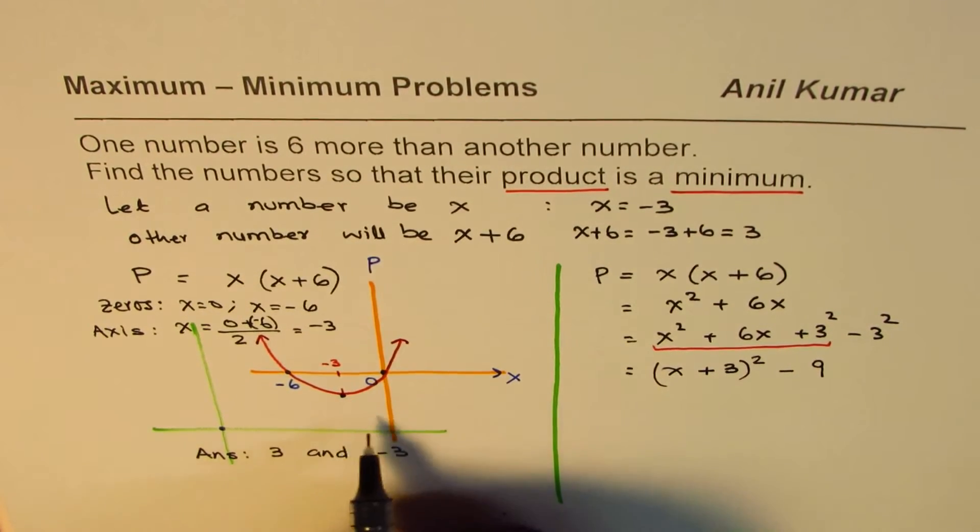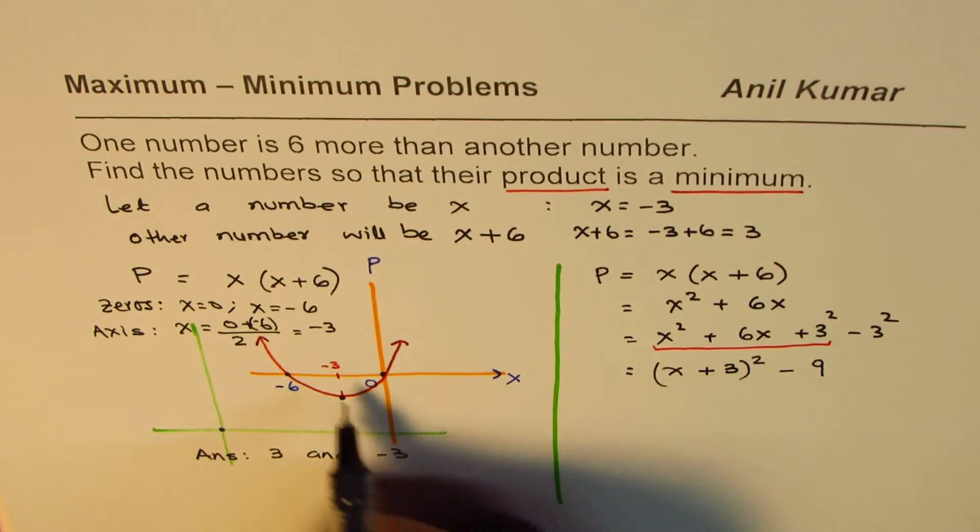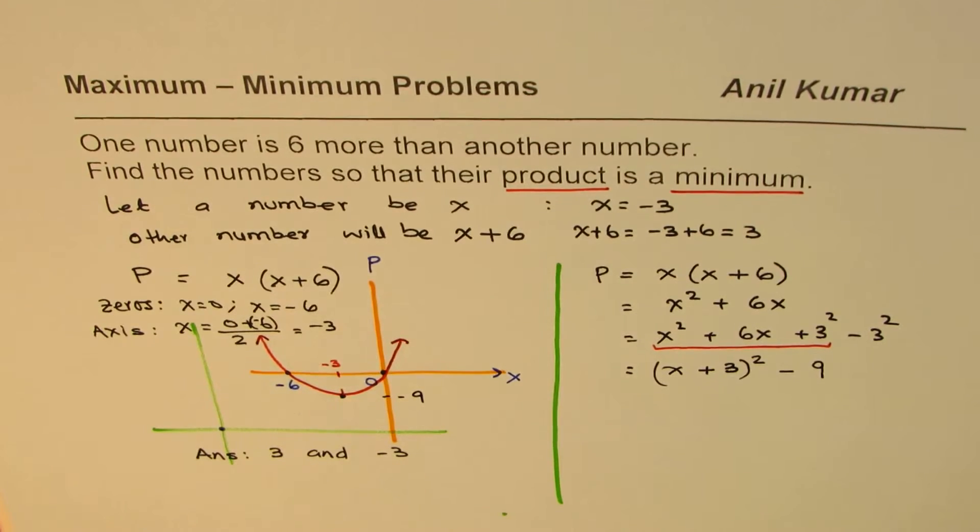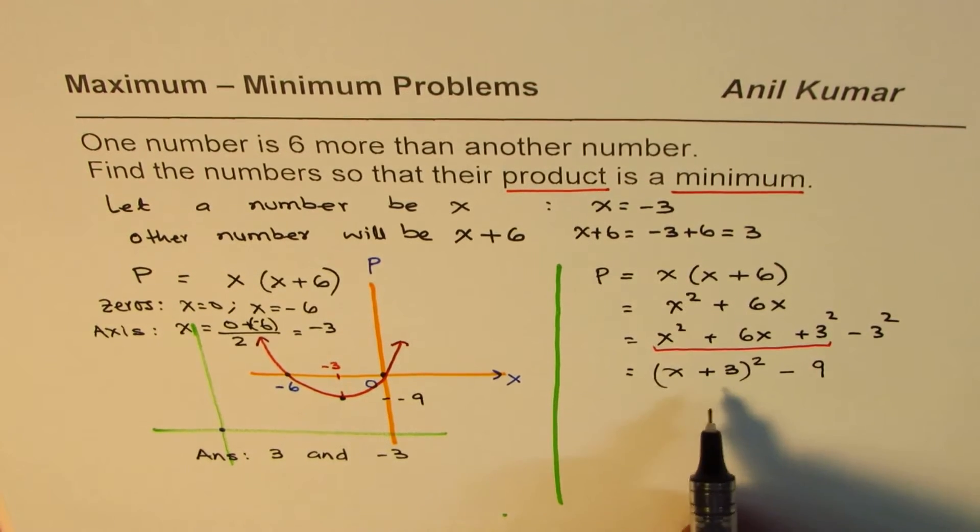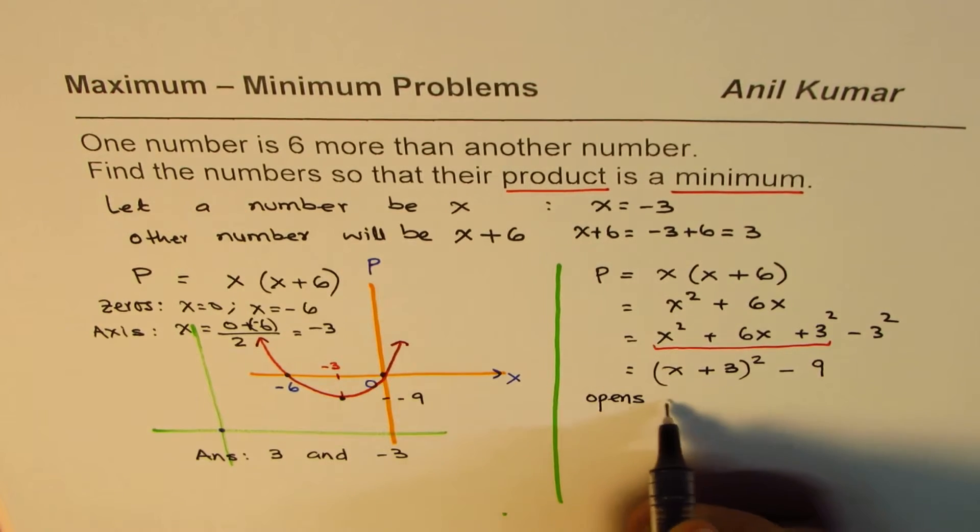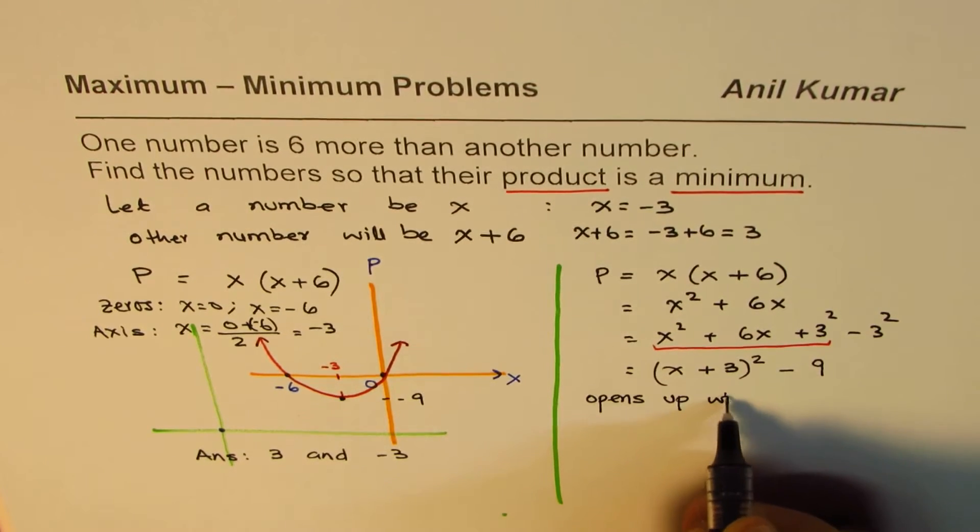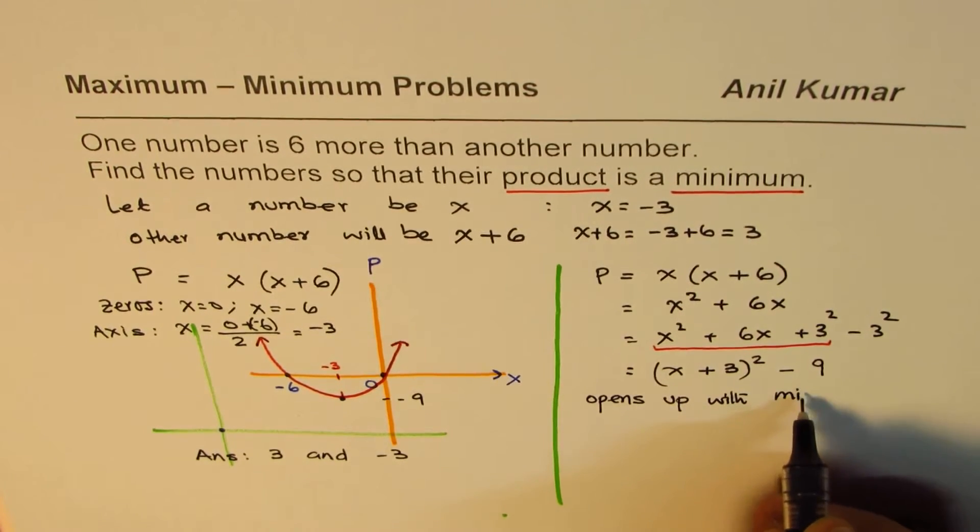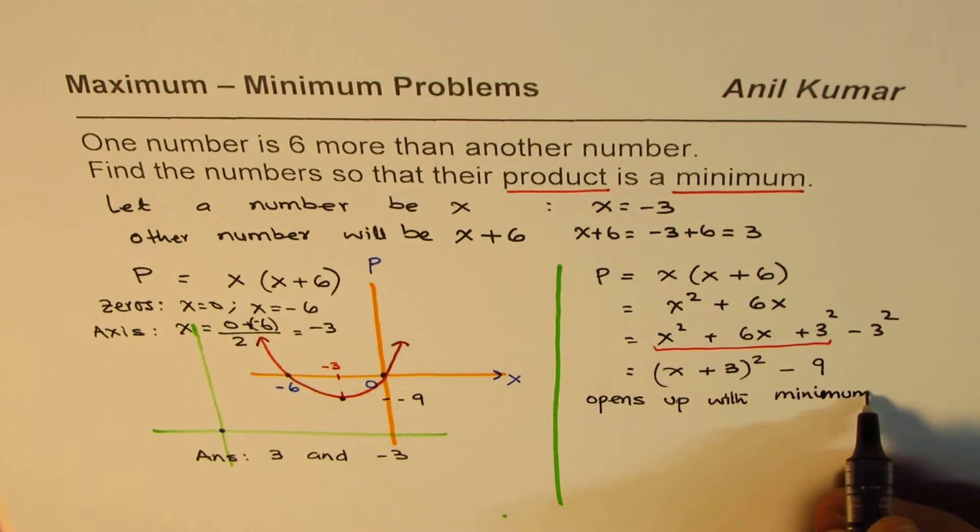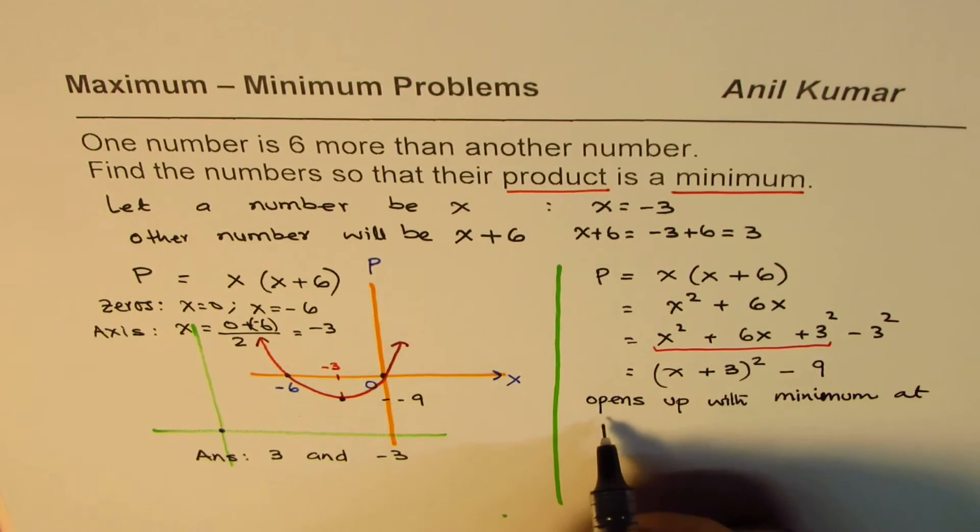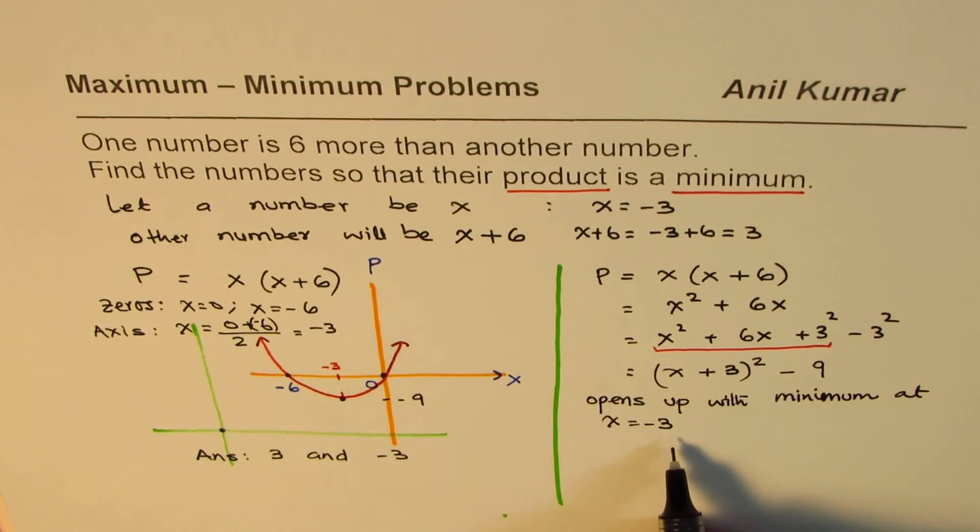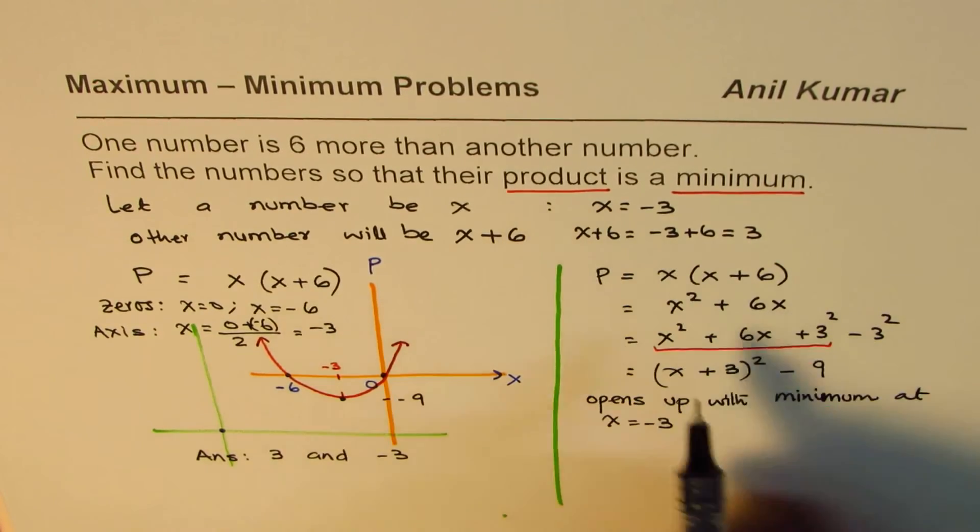Now that gives you the vertex. So the vertex is at X equals to minus three, the value is minus nine. Do you see that? So that is the vertex. So from here you know it opens up, correct, with minimum at X equals to minus three. So we get our number X equals to minus three. So that's an alternate way of finding.